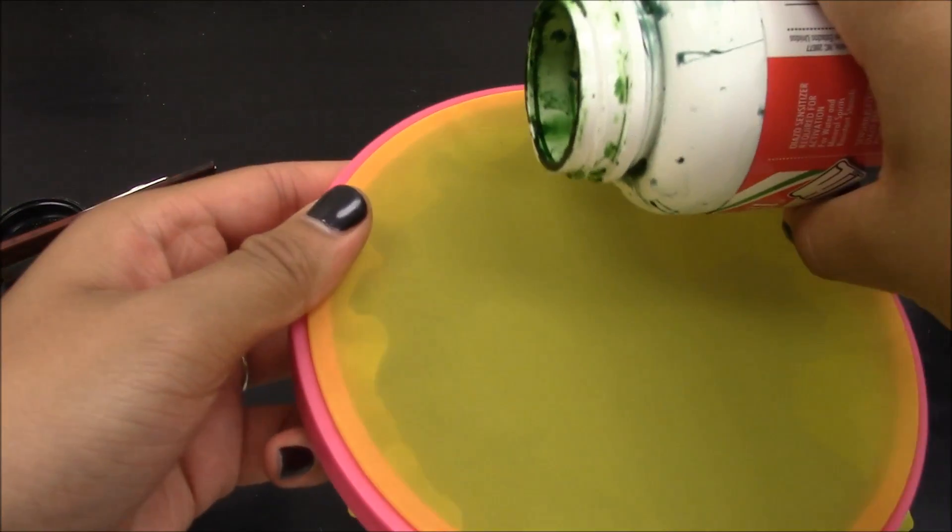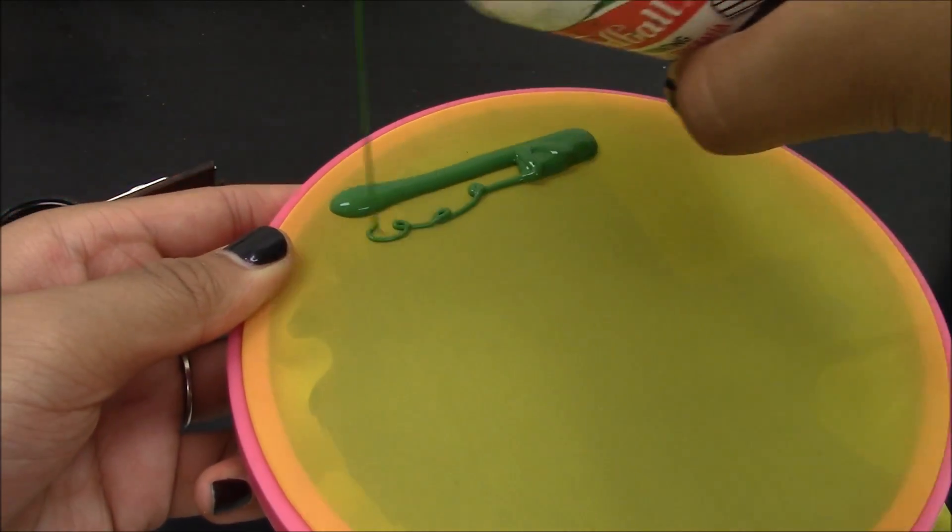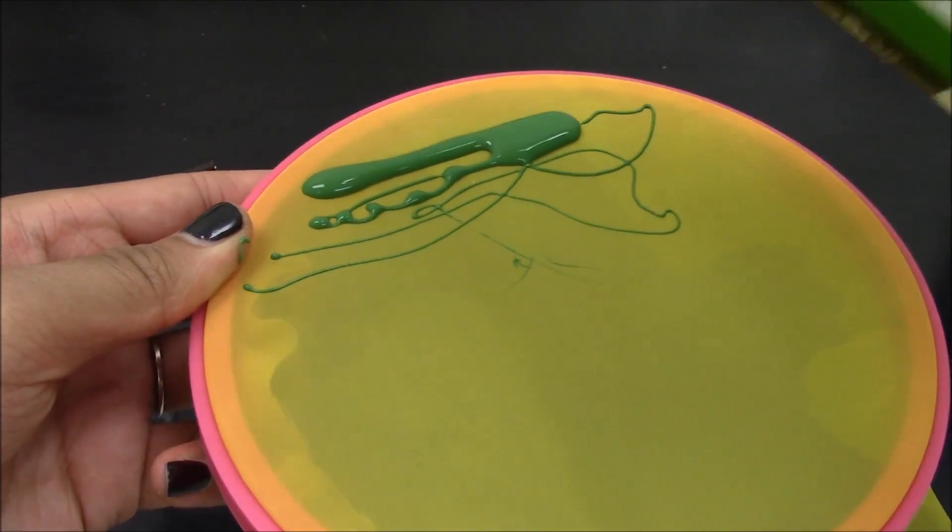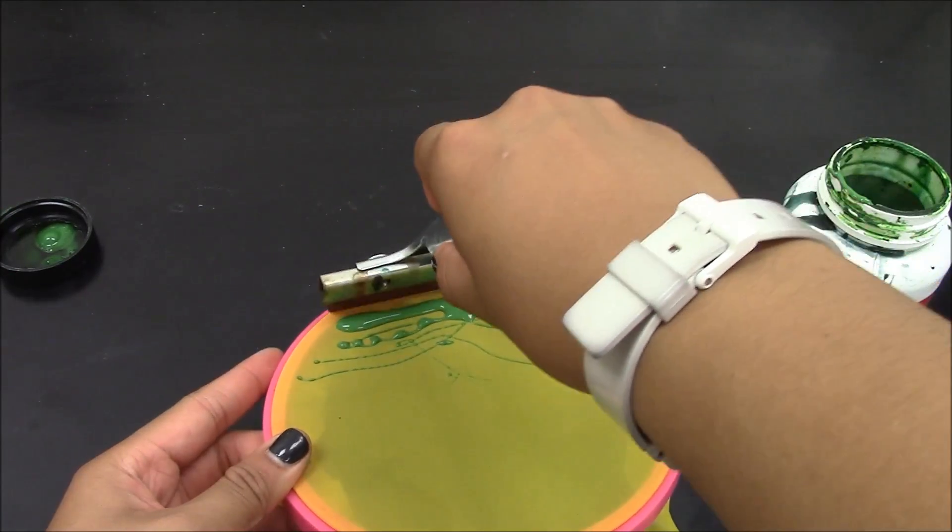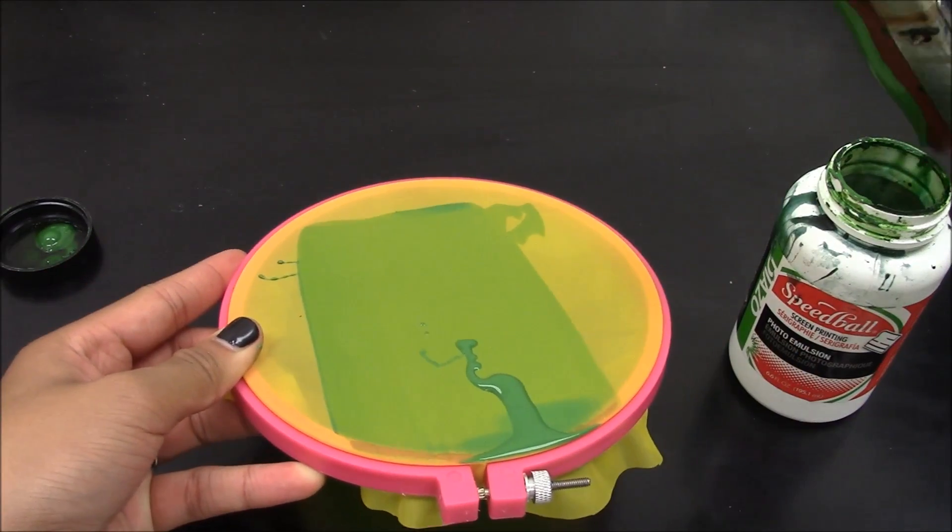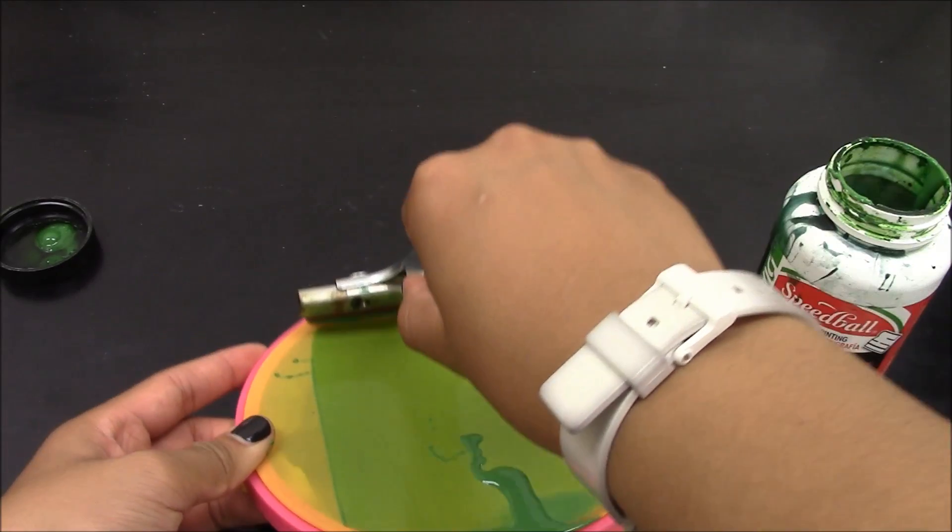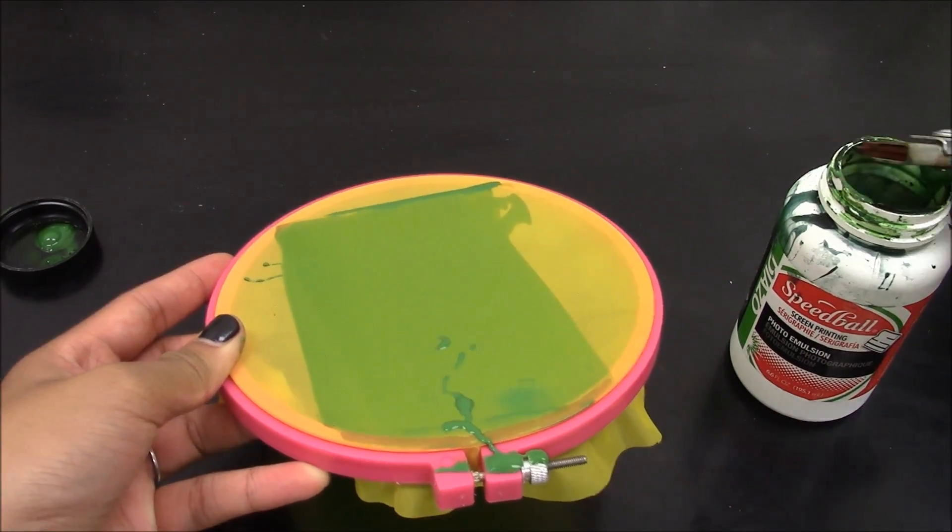Open the mixed speedball emulsion and pour a line of emulsion across the top of the mesh. Now take the squeegee and pull the emulsion across the screen. The squeegee should make a zipping sort of noise as it runs across the screen. Make sure to have enough pressure when spreading the emulsion. You want only a thin layer of emulsion on the screen.